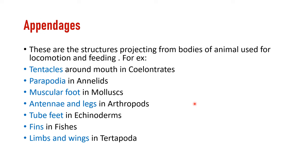Now let us talk about appendages — structures which help in movement, locomotion, and feeding. In coelenterates we have tentacles around the mouth. In annelids we have parapodia for locomotion. In mollusks we have muscular feet. In arthropods we have antennae and legs in different numbers. In echinoderms, tube feet perform this function. In fishes we have fins, and limbs and wings are present in tetrapods.